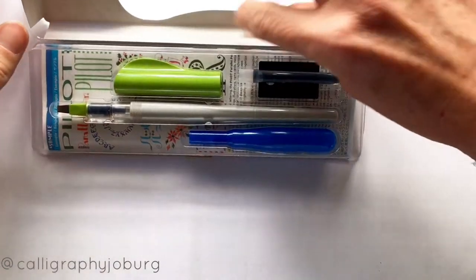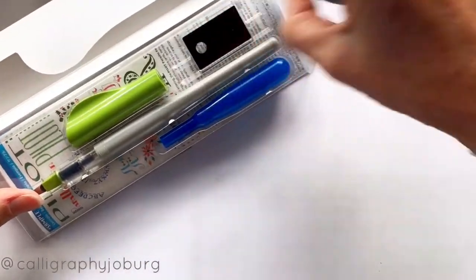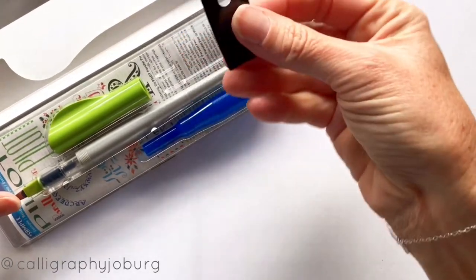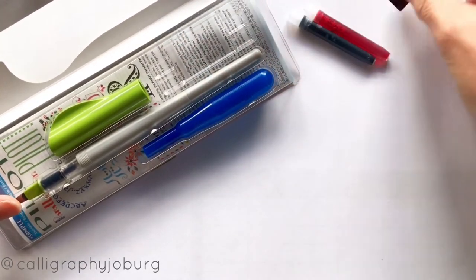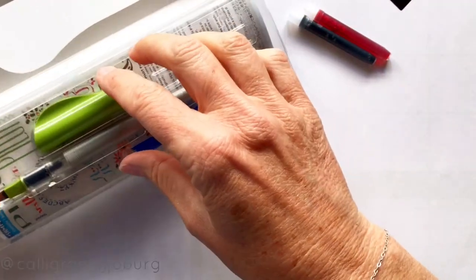The Pilot Parallel Pen comes with the pen, two ink cartridges, and some other very strange looking things that people often ask me about. One of them is this little piece over here which I'll show you in a moment. Let me just check out the lid. And I've got a 3.8 mil pen here.